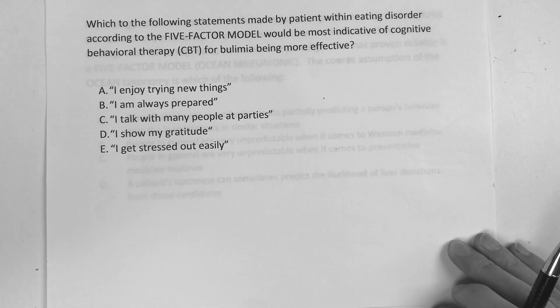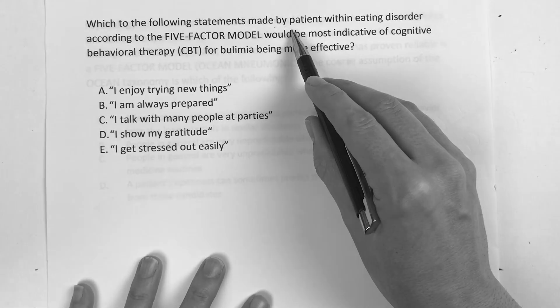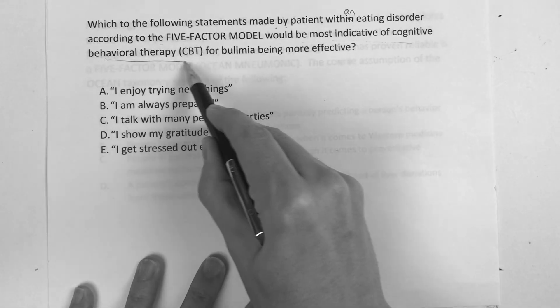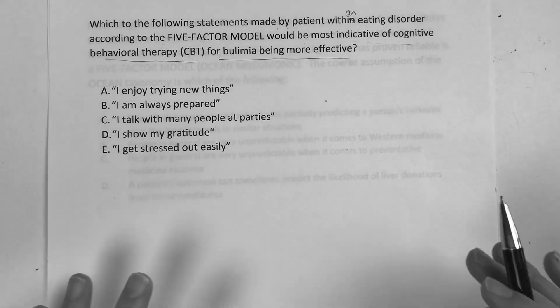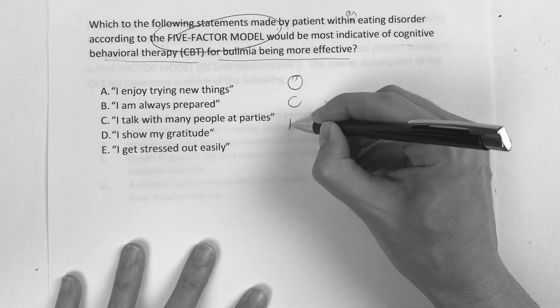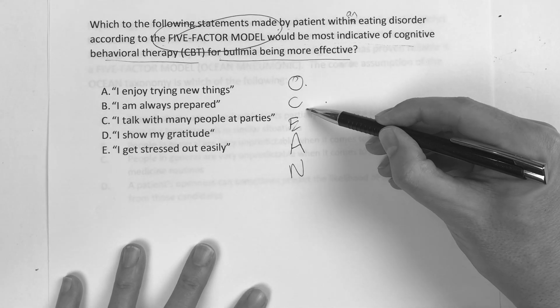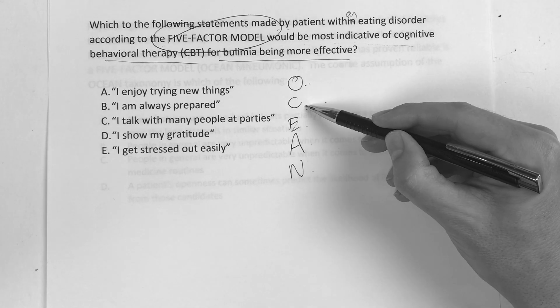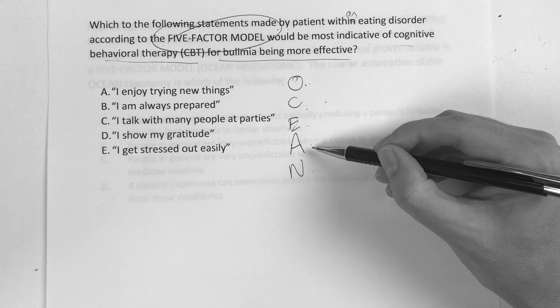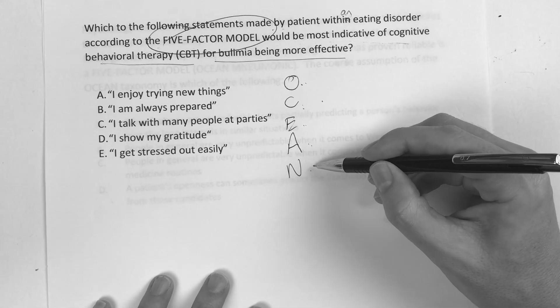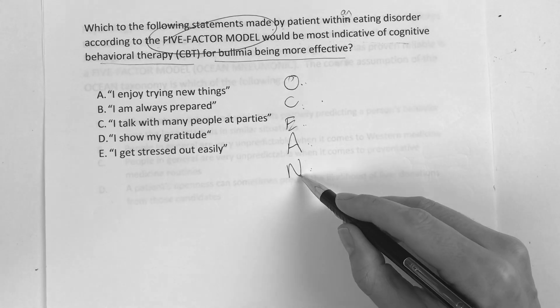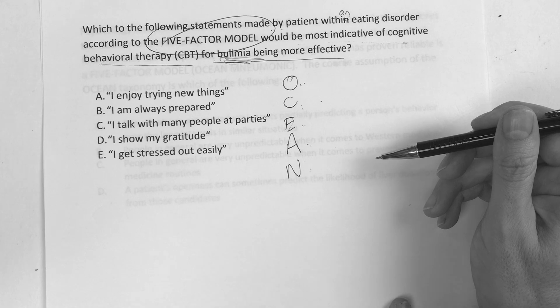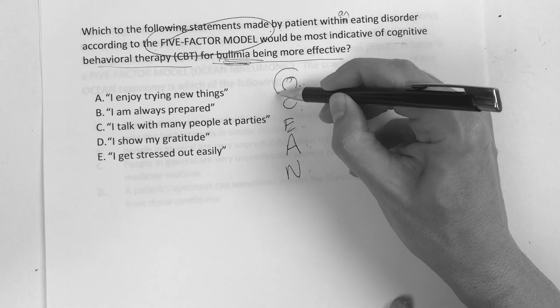Next question says, which of the following statements made by the patient with an eating disorder according to the five-factor model would be most indicative of cognitive behavioral therapy for bulimia being more effective? Five-factor model. We have OCEAN. Openness, conscientiousness, extroversion, agreeableness, neuroticism: bulimia, dietary habits, burnout, tissue donor donations, and then dyspepsia. So in this situation, which one would be more indicative of behavioral therapy for bulimia? You better be jumping all over openness. All over openness.